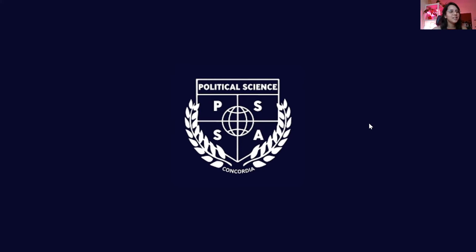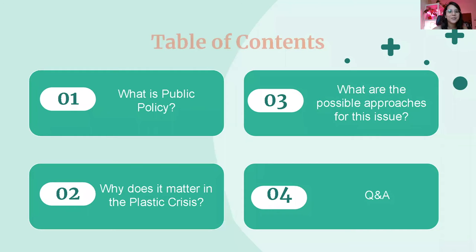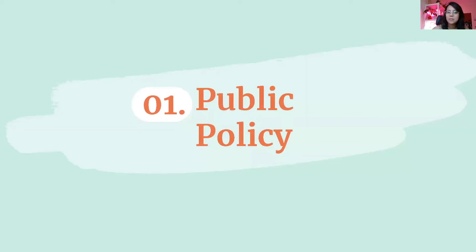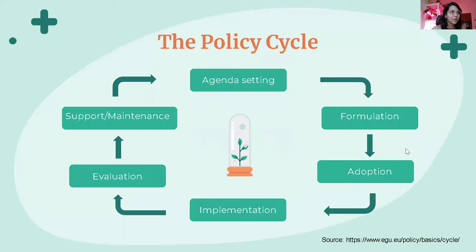We'll now start the webinar. The table of contents: first, a rundown of what public policy is and why it matters in the plastic crisis context; then, the possible approaches that scholars have discussed and governments have adopted; and finally, a Q&A session. So, public policy is basically a tool of government to solve problems. It can be a law or an initiative — this will be clearer when I explain the policy cycle.